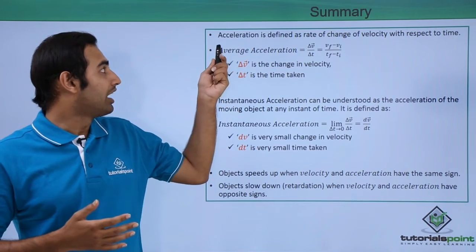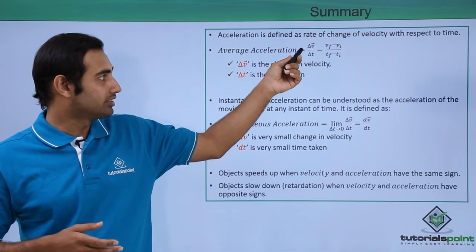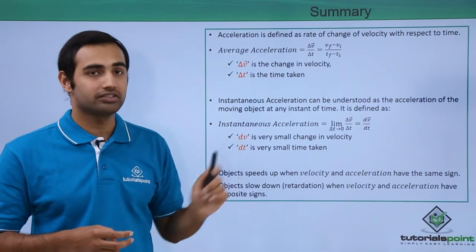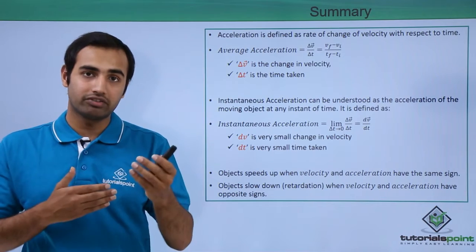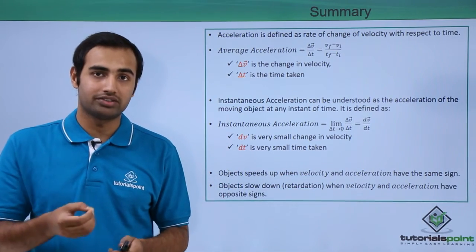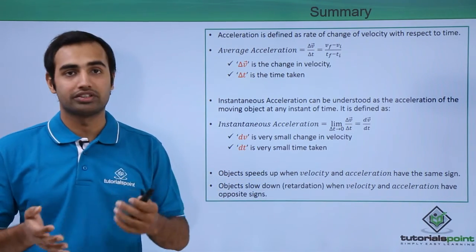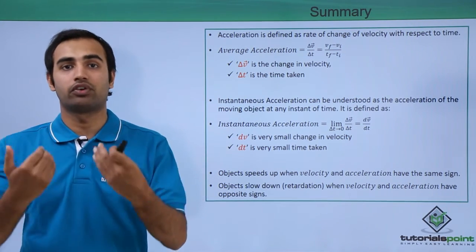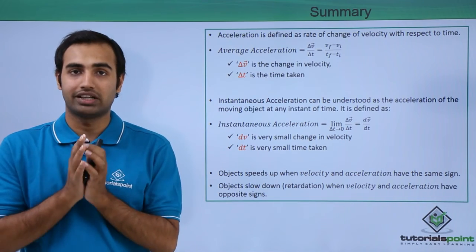Summarizing what we just learned: acceleration is defined as the rate of change of velocity with respect to time. Average acceleration is change in velocity upon change in time, also written as v final minus v initial upon t final minus t initial. Instantaneous acceleration is given by dv/dt, or dv vector by dt, which is the derivative of velocity with respect to time. Objects speed up when velocity and acceleration have the same sign — pointing in the same direction. Objects slow down or retard when velocity and acceleration have opposite signs or are pointing in opposite directions. When they point in the same direction, acceleration helps velocity grow; when opposite, acceleration hinders velocity and decreases it.